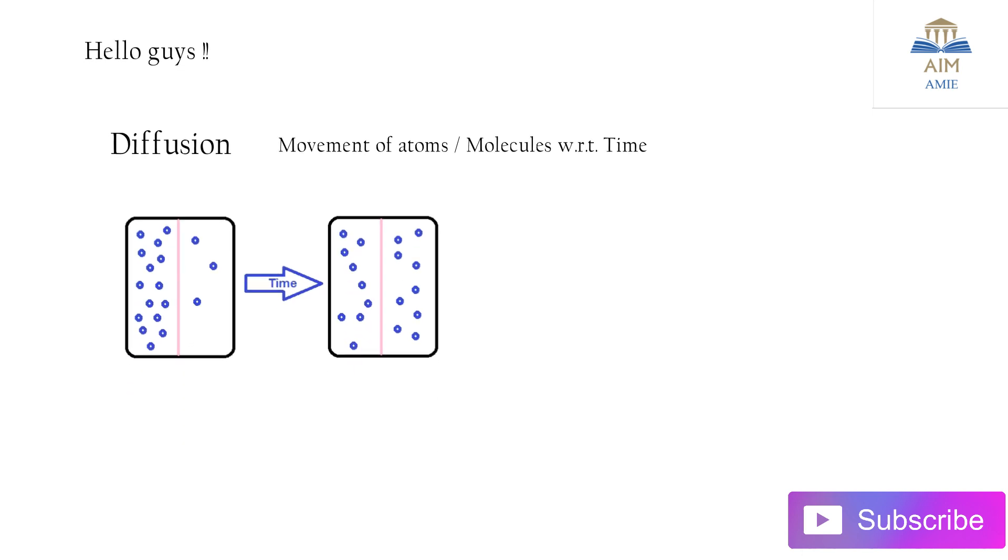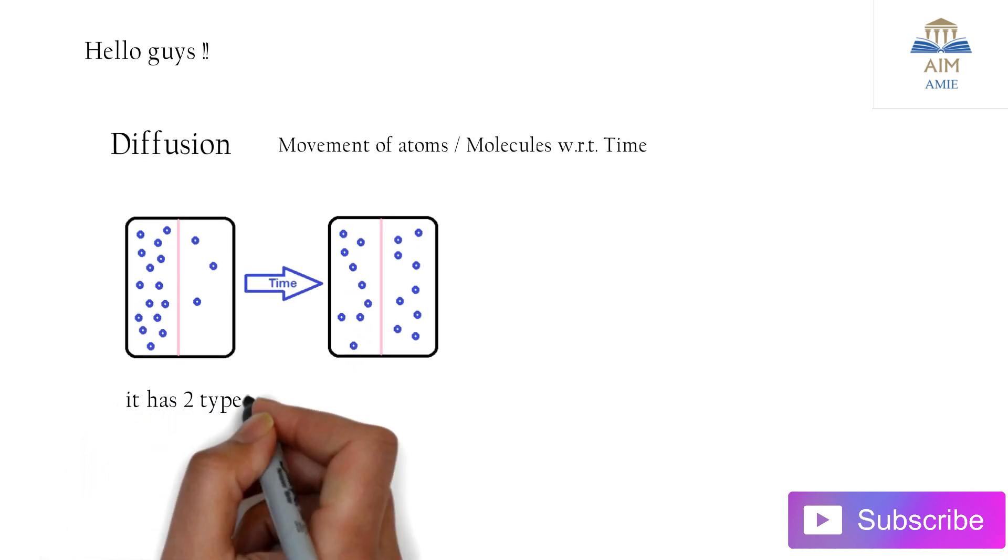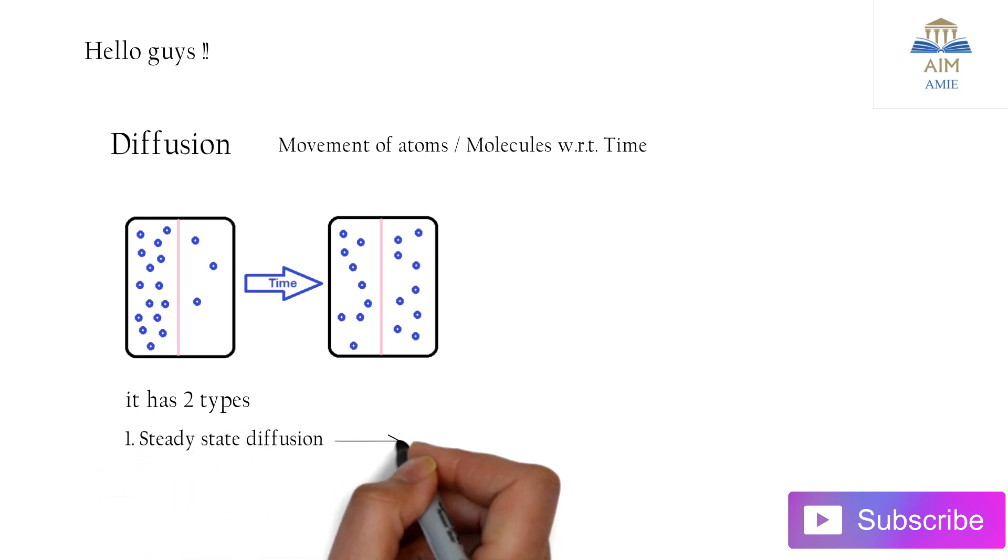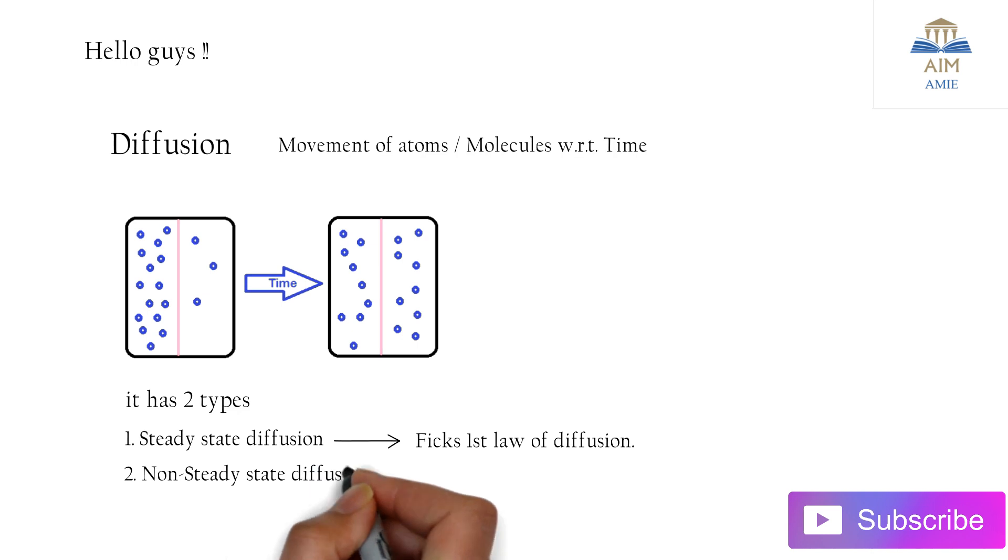I have given some examples. Diffusion is of two types: first is the steady-state diffusion, that is Fick's first law of diffusion, whereas the second one is a non-steady state diffusion.